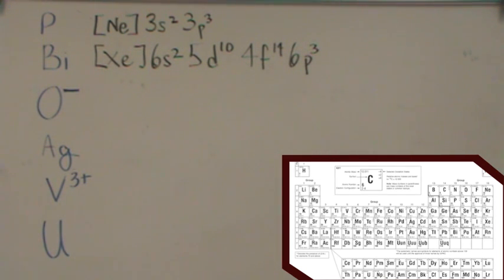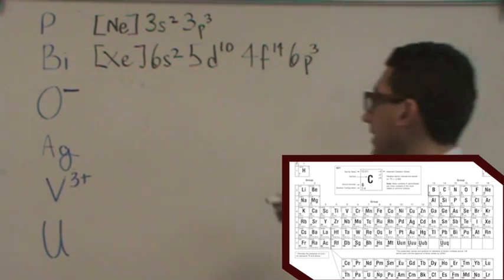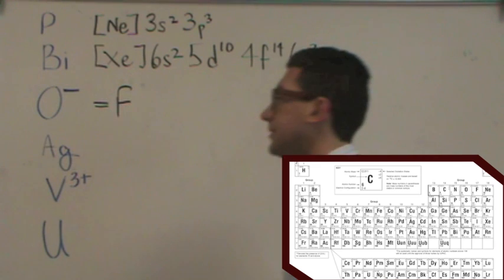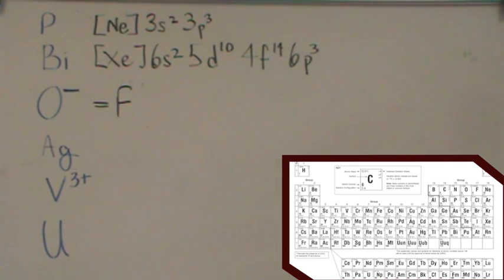All right. Now, let's do an ion. O minus. What you need to realize is when oxygen gains an electron, this will have the same electron configuration as fluorine. So all you have to do is write it down for fluorine, and you're good. So for fluorine, that's helium.